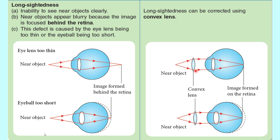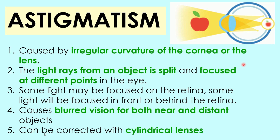Long-sightedness can be corrected by wearing glasses with convex lenses to converge the light before it enters the eyes. Thus, the light can be focused exactly on the retina.